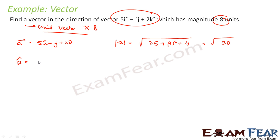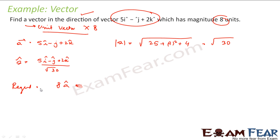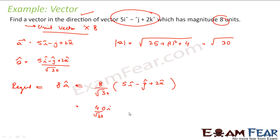So my A unit vector is nothing but (5i minus j plus 2k) divided by root 30. This is my unit vector of magnitude 1. So my required vector is nothing but 8 into A unit vector. This will be a vector having the same direction as A but magnitude 8, because 8 into 1 is 8. So this becomes (8 by root 30) into (5i minus j plus 2k), that is 40 by root 30 i cap minus 8 by root 30 j cap plus 16 by root 30 k cap.